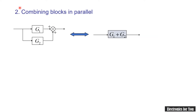The second rule is combining blocks in parallel. If G1 and G2 are two blocks connected in parallel, then the resultant will be G1 plus G2 — the sum of the transfer functions of the two blocks. Note that G1 has a positive sign and G2 has a negative sign; the respective sign will be kept as it is.